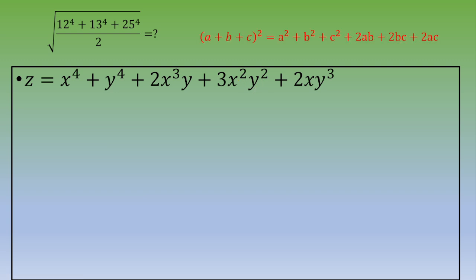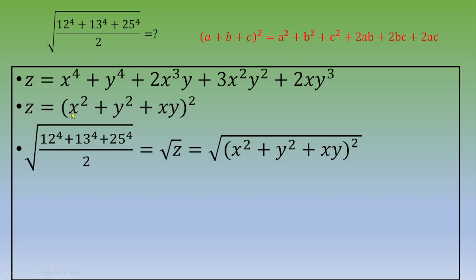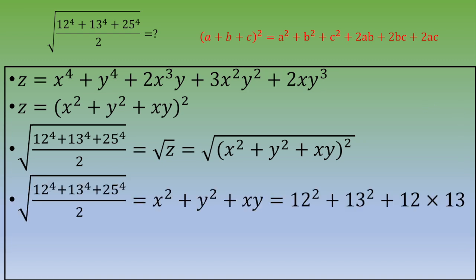Using the formula (a plus b plus c) squared equals a squared plus b squared plus c squared plus 2ab plus 2bc plus 2ac, we can identify our expression as (x squared plus y squared plus xy) squared. Therefore, the square root of (12 to the power 4 plus 13 to the power 4 plus 25 to the power 4) divided by 2 equals x squared plus y squared plus xy, which is 12 squared plus 13 squared plus 12 times 13.